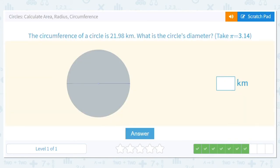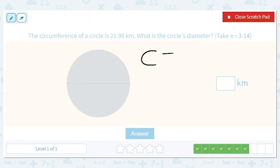The circumference of a circle is 21.98 kilometers. What is the diameter? Okay, so circumference in this case we'll use equals πd. So that's 21.98 equals 3.14 times d.